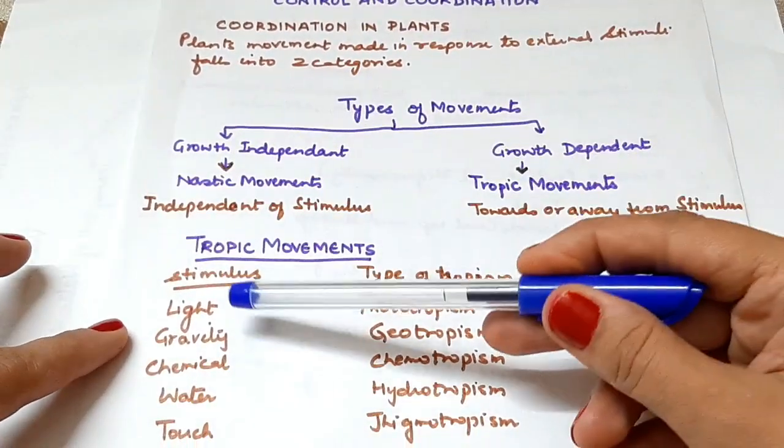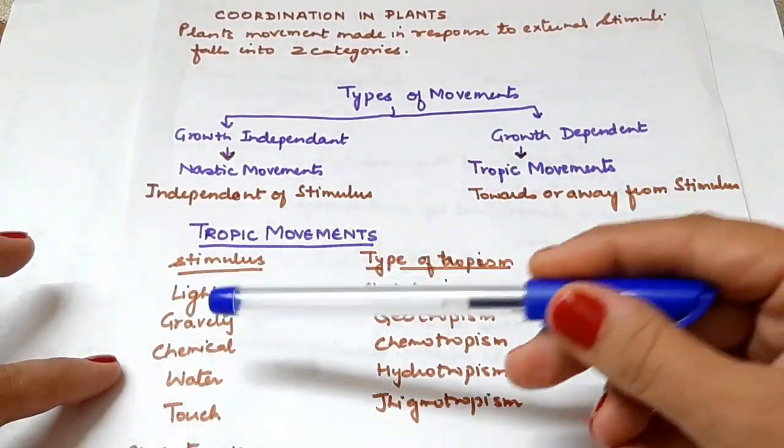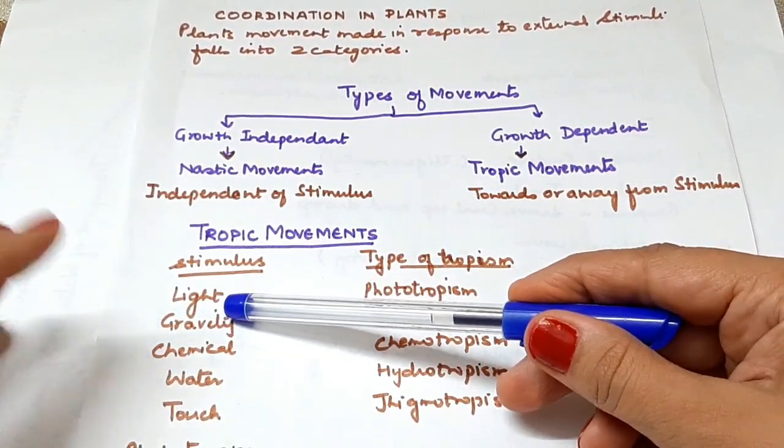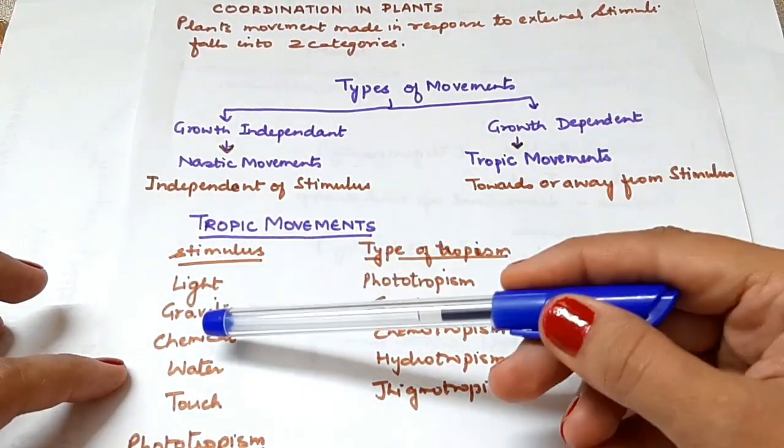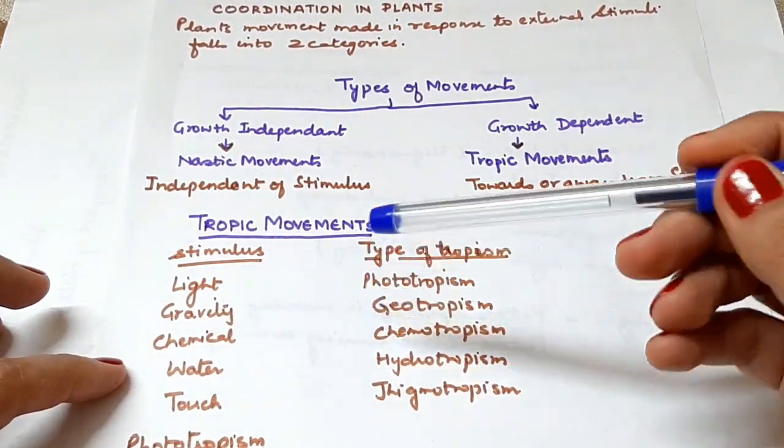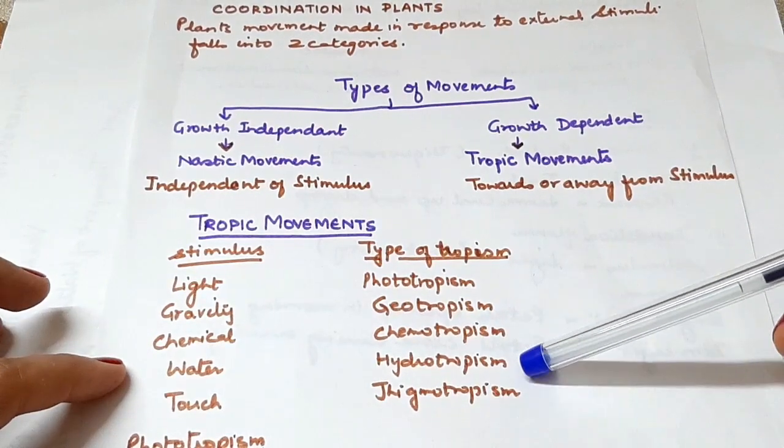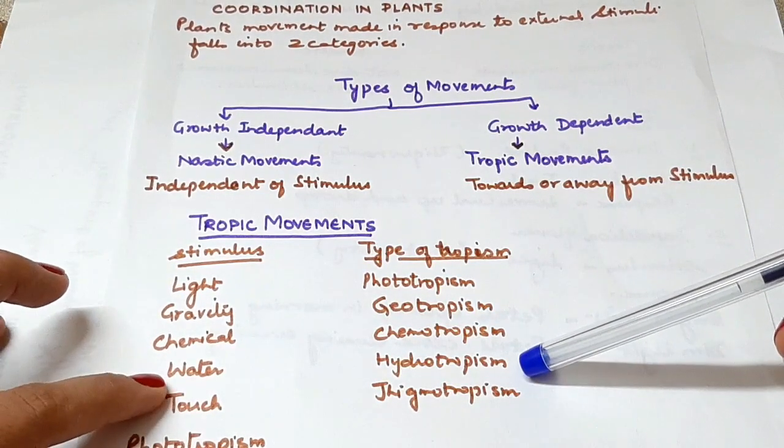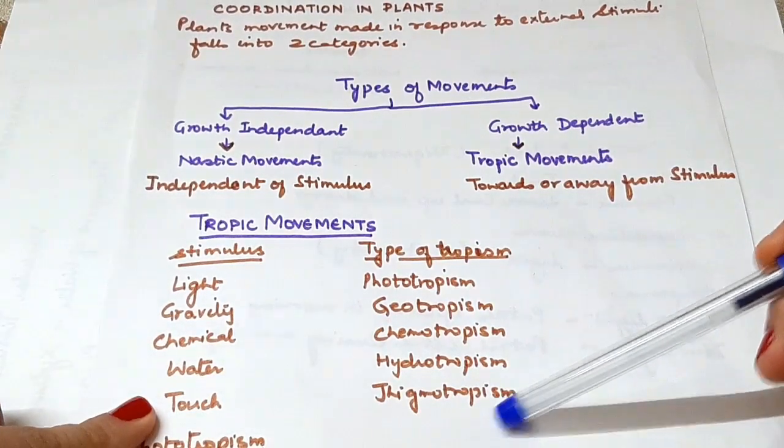Trophic movements are named based on the stimulus. If light is the stimulus, it's called phototropism. If gravity is the stimulus, it's geotropism. If chemical is the stimulus, it's chemotropism. If water is the stimulus, it's hydrotropism. If touch is the stimulus, it's thigmotropism.